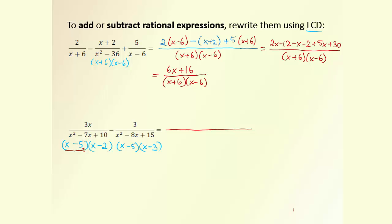The least common denominator takes each factor to the lowest exponent of its occurrence. We need (x − 5), (x − 2), we don't need a duplicate (x − 5), and we add (x − 3) because it's different. So the LCD is (x − 5)(x − 2)(x − 3). The common denominator must be divisible by each of the previous denominators, and this one is.